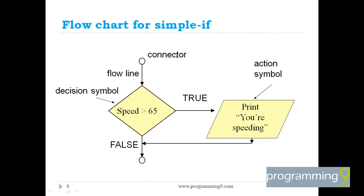Let us see a simple flowchart. Speed is greater than 65 — if the condition is true, control jumps to print 'you are speeding'. If the condition is false, it goes sequentially as usual, completely omitting that statement. Simply, we are disrupting the normal sequential flow of a program.